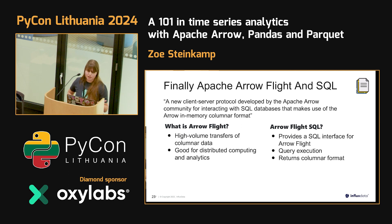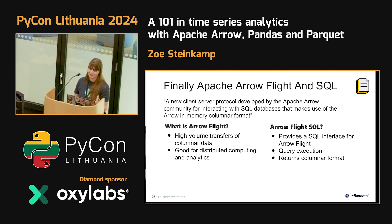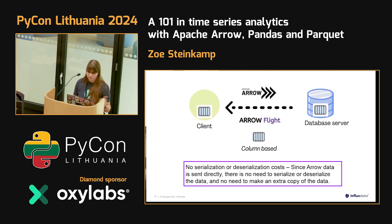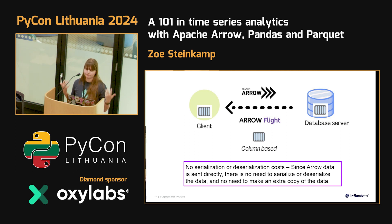Apache Arrow Flight is basically a volume transfer protocol for columnar data — good for both distributed computing and analytics. Arrow FlightSQL is the SQL flavor of it. Since InfluxDB also supports its own query language InfluxQL, we use both Flight and FlightSQL. There's no serialization or deserialization cost since data is sent directly, making it much cheaper to transfer data between processors.